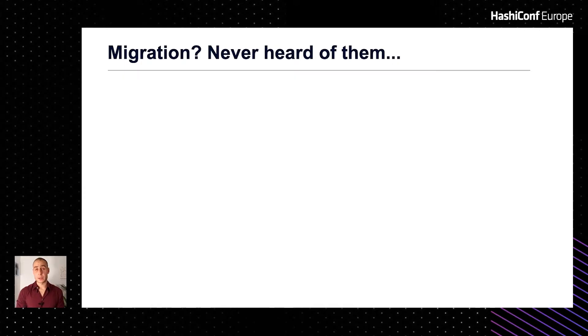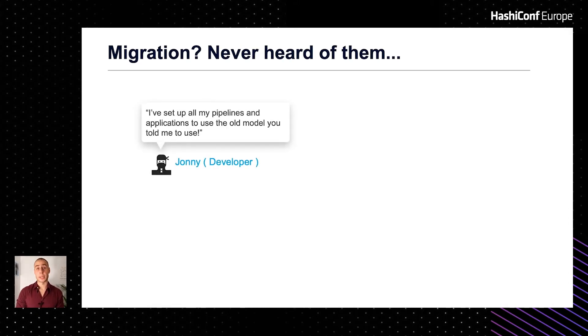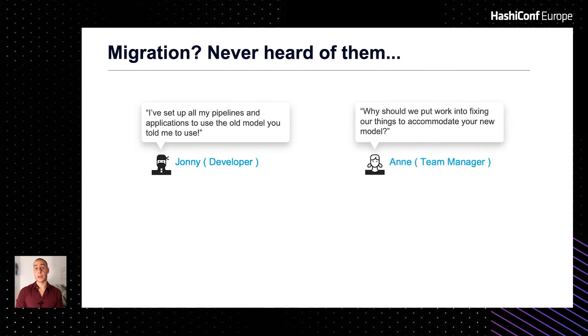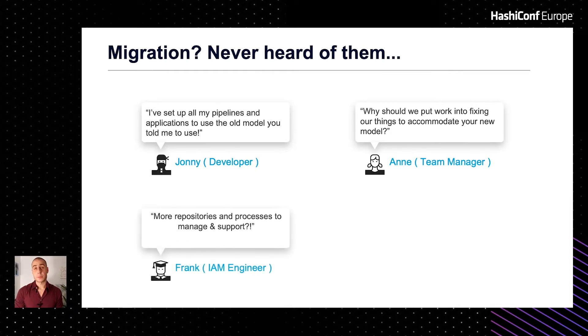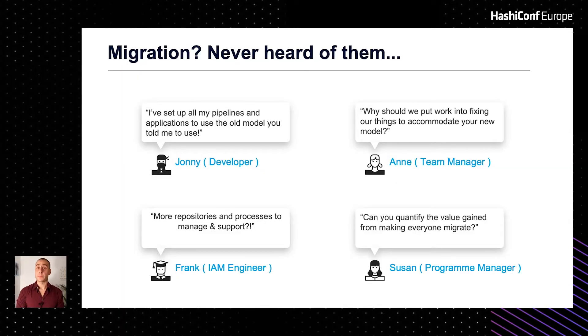Despite investing all this time in developing this new solution, we were still hearing a lot of negative feedback from users and stakeholders across the business. Developers were hesitant to accept the need to redo how they were managing their secrets for applications they had already configured. Managers were unhappy with the prospect of their resources needing to commit time to fix something they didn't believe was on them to fix in the first place. Even within the IAM team, there were sentiments around having another configuration repository to manage, more approvals, and more things to support. We needed a strategy and a message to share with the business to highlight the importance of moving to this new model.